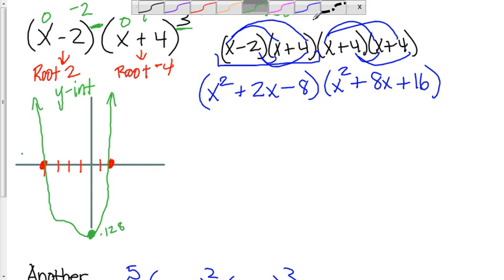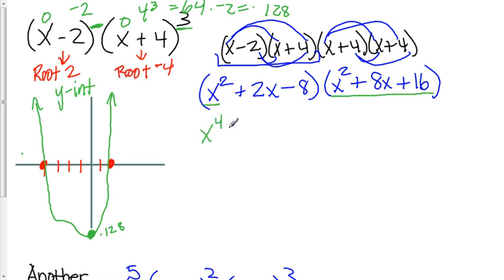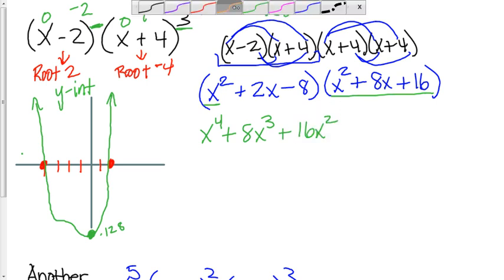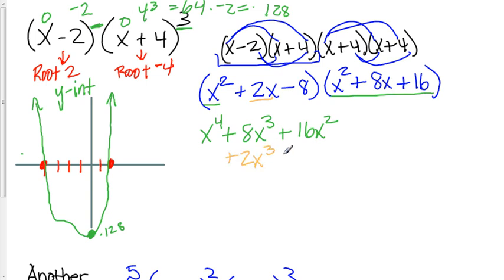Now multiplying these together: x squared times everything over here, 2x to the 4th plus 8x to the 3rd plus 16x squared. Then multiplying 2x by everything would be plus 2x to the 3rd plus 16x squared plus 32x. And multiplying everything by a negative 8 would be a negative 8x squared minus 64x minus 128.